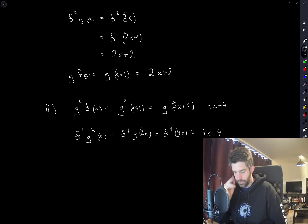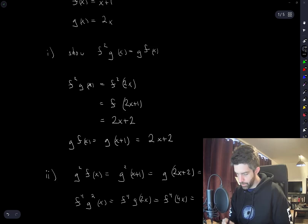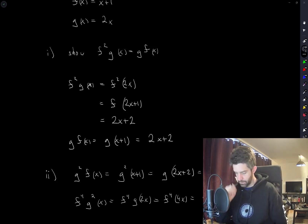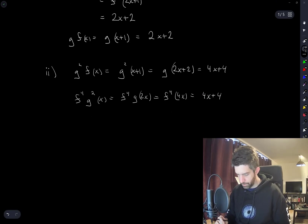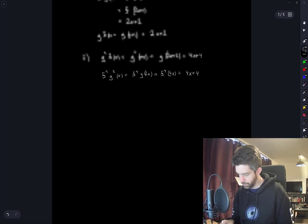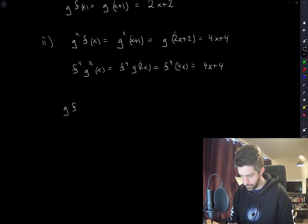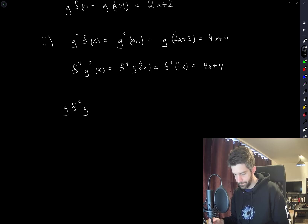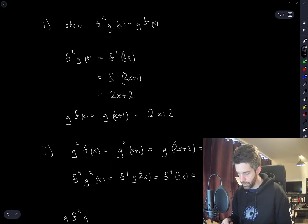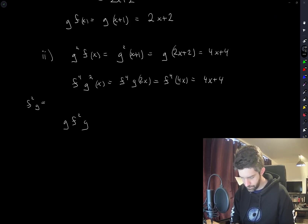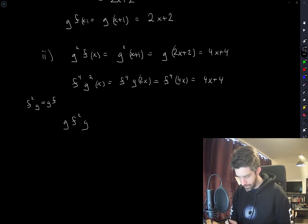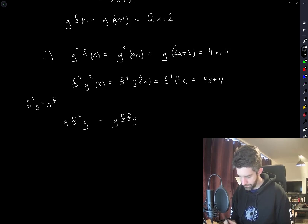Are these the only ways? We showed from Part 1 that f squared g equals gf. The given example is gf squared g. Using the identity, this is the same as gffg, which is equal to f squared gfg. So there may be another one: doing the computation by substituting x confirms this works.